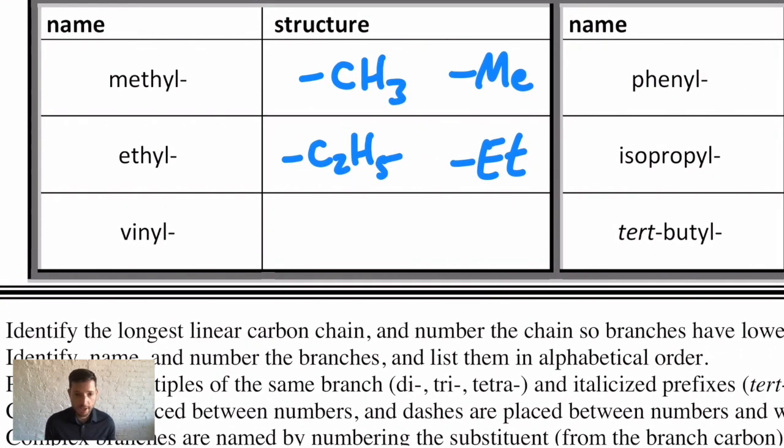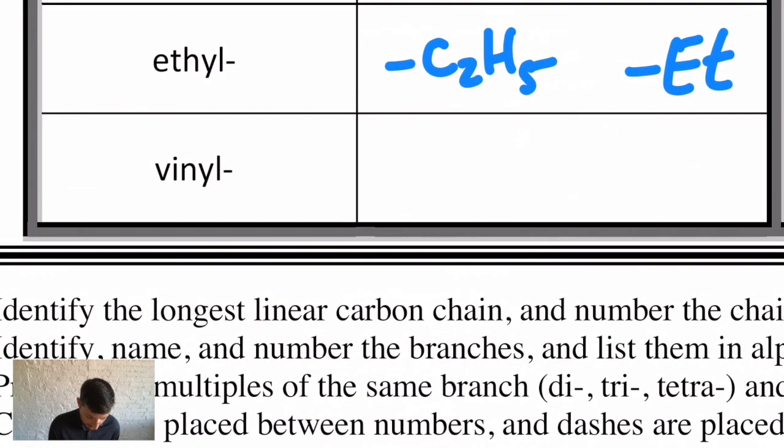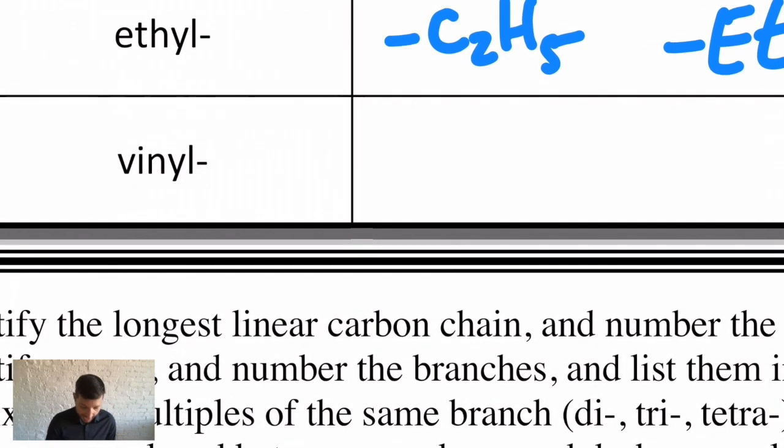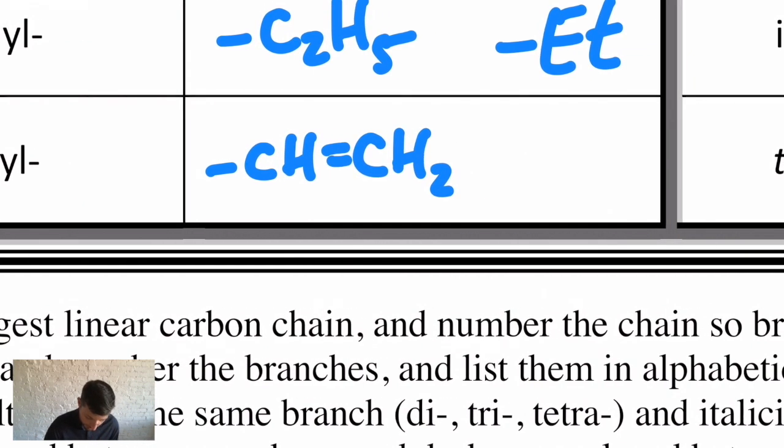Then there's a couple of others that I just want to show you that are not from straight-chain alkanes. They sometimes have a little functionality in them and they're very common, so I would like you to commit these to memory. A vinyl is an alkene branch—it's specifically a CH=CH2 branch.